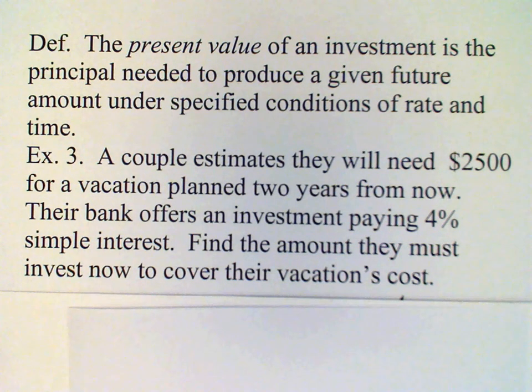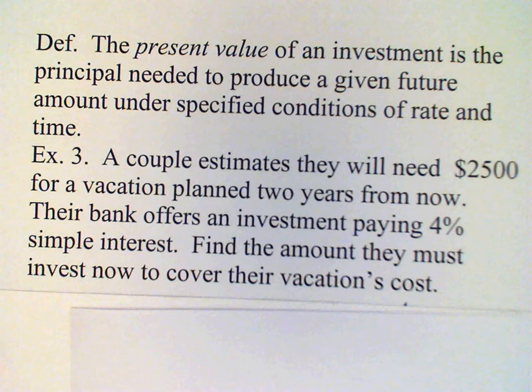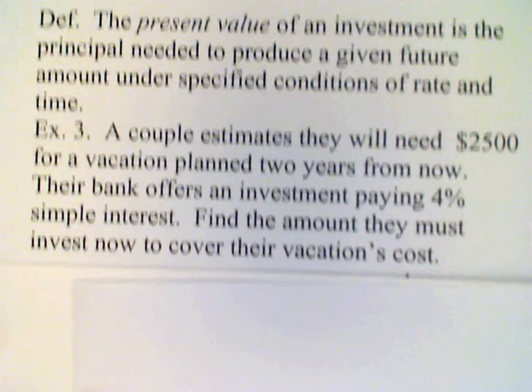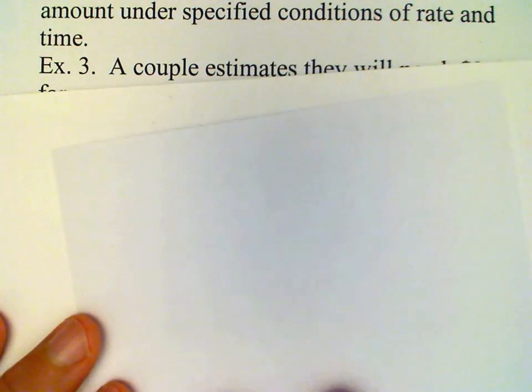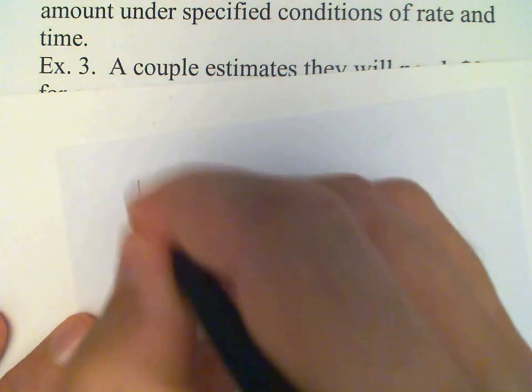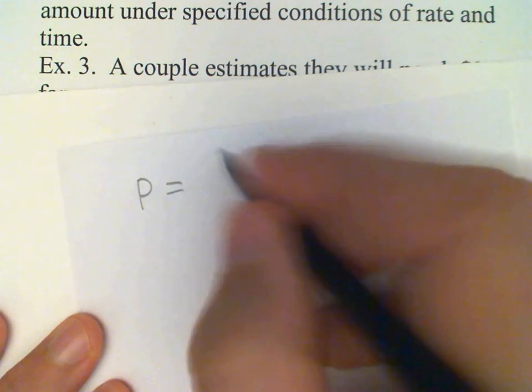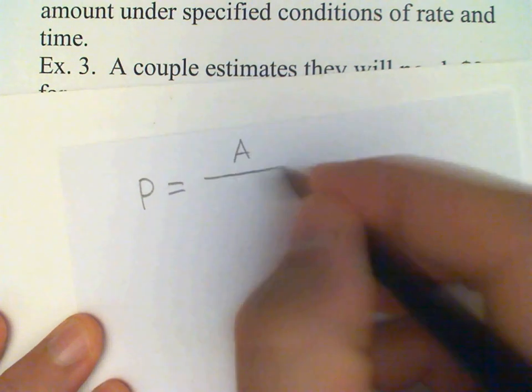So this is a present value problem. We know what amount we're going to need in the future - that's the $2,500. We know the rate and the time. So it's just a matter of solving for the present value. P equals A divided by (1 + RT).